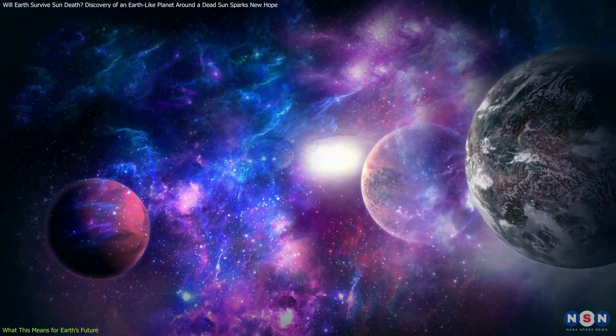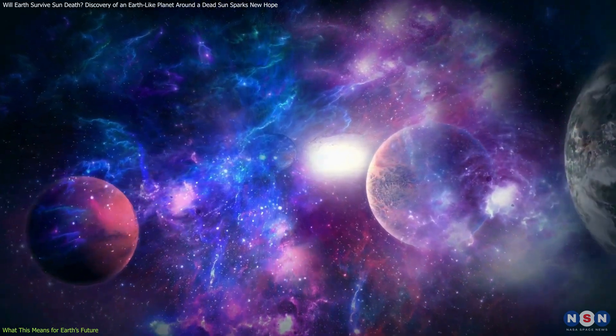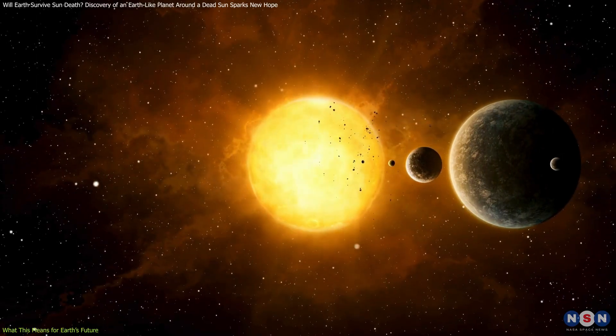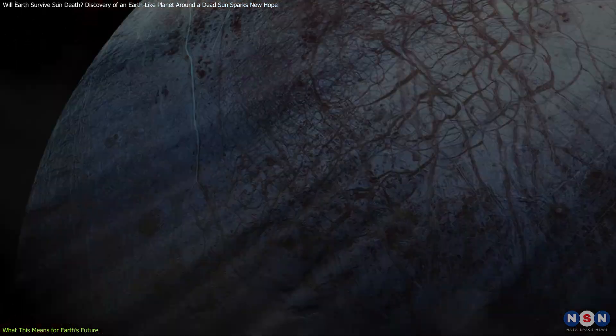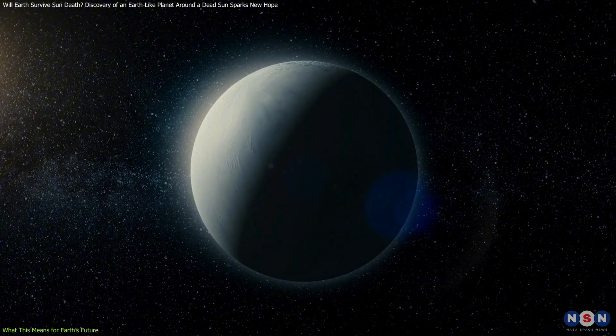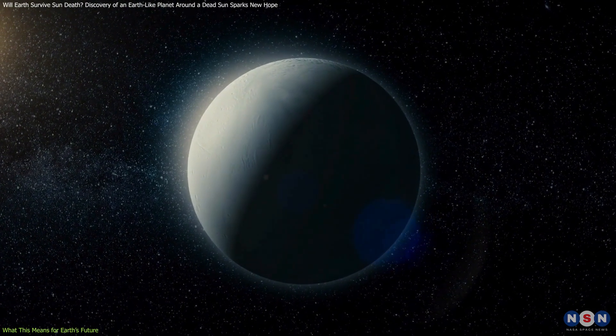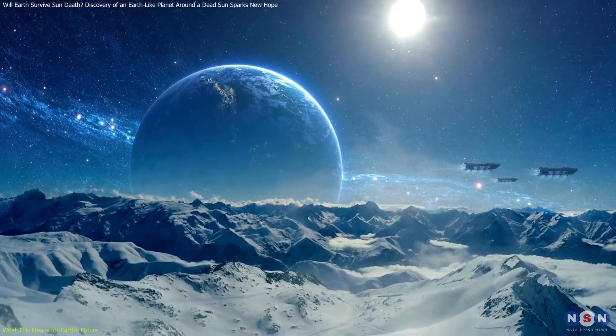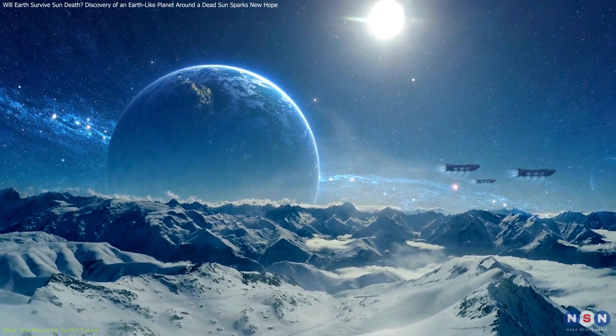However, there is still a glimmer of hope for life beyond Earth. As the Sun's habitable zone moves outward, icy moons like Europa, Ganymede, and Enceladus could warm enough to support liquid oceans, offering potential refuges for future generations far from a dying Earth.